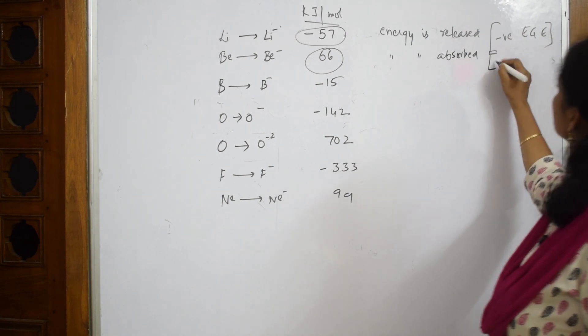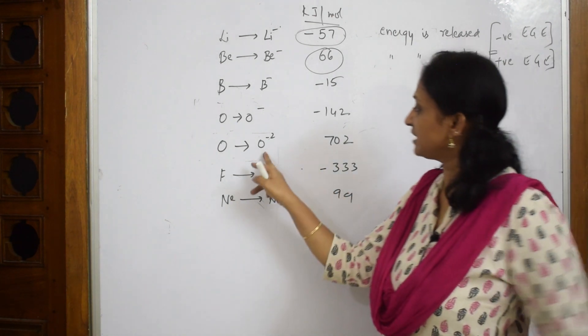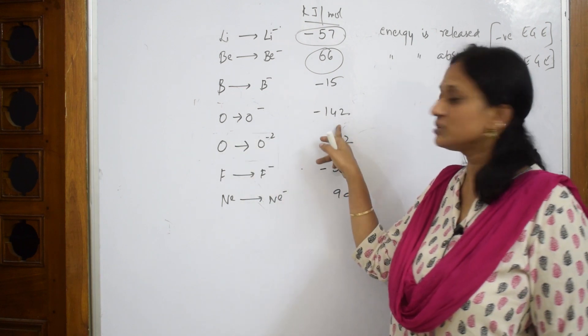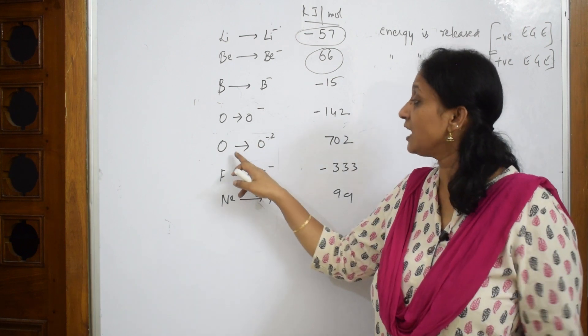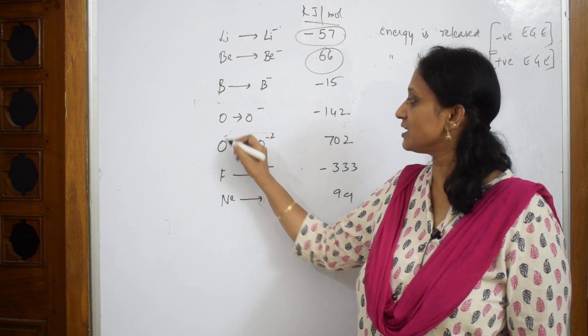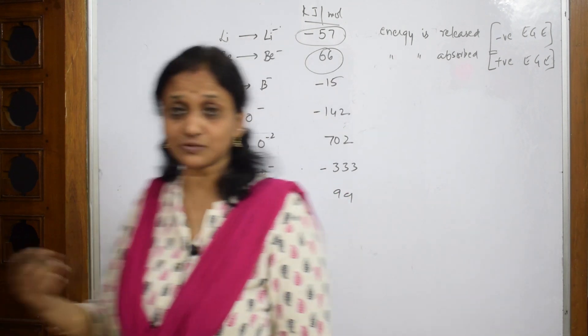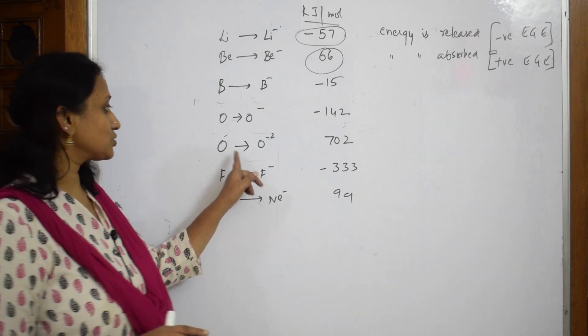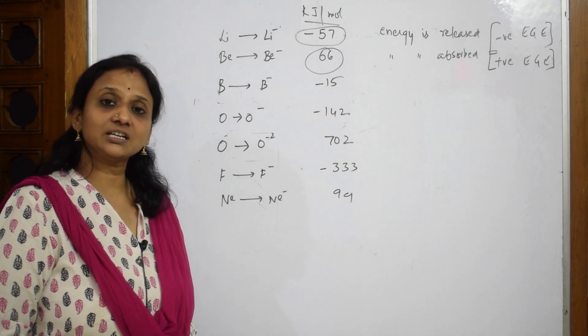See here, when I take this example - suppose when I'm adding one electron to oxygen, it's becoming O minus. During that process, energy is released. But if I'm further adding one more electron to this, O minus plus one more electron, it's absorbing energy. So the first time it's easy, energy is released. But the second time to add, I need to supply some energy. So there are two types of electron gain enthalpies: positive electron gain enthalpy as well as negative electron gain enthalpy.